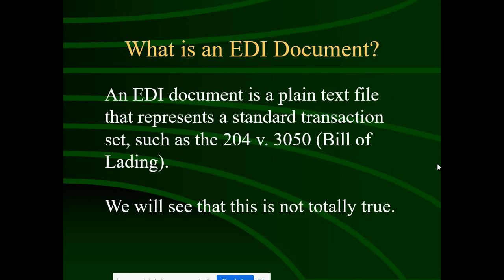If we talk about what is an EDI document — how you can identify it — an EDI document is a plain text file generally represented in a standard transaction set. For example: 834 transactions, 850 purchase order, 855 purchase order acknowledgement, 204 and 305 bill of lading. These numeric format digits are what identify an EDI document.